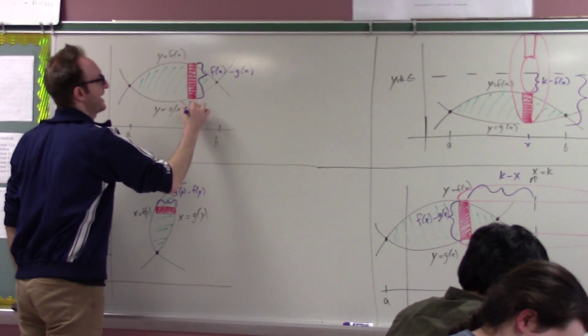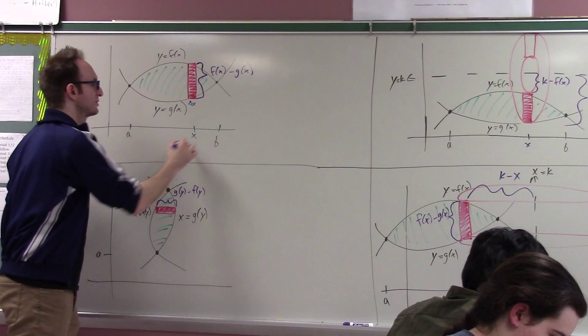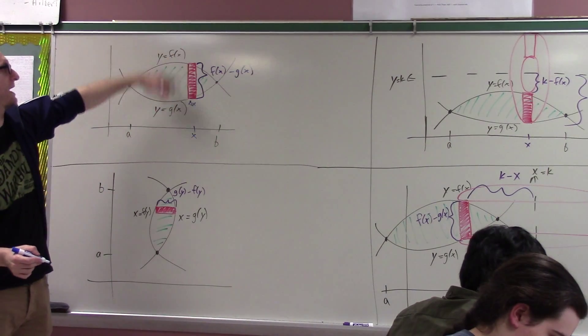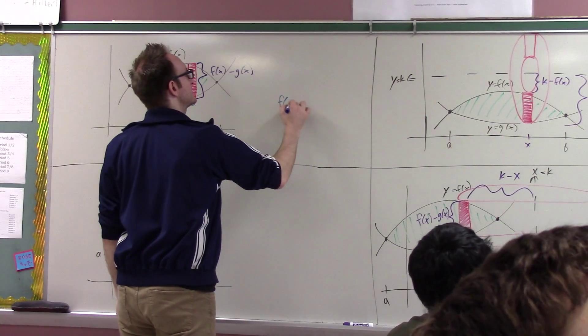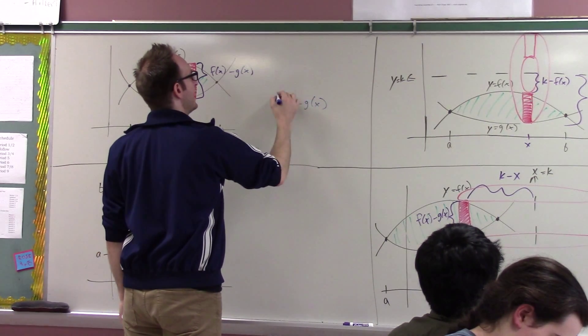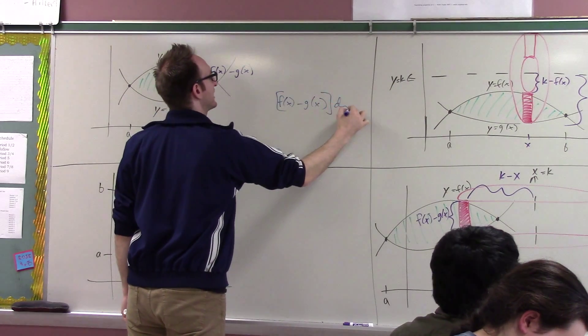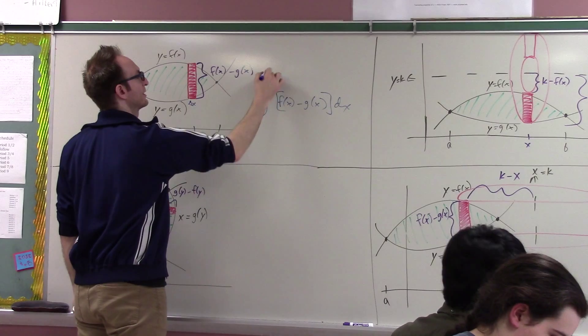In particular, they're like delta x thick, and for an arbitrarily chosen x value, the height of the rectangle is f(x) minus g(x). So the area of one rectangle is just f(x) minus g(x), the difference in the y values, times the thickness of the rectangle, and then you just add them all up and you're going to get it to be cool.